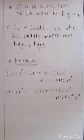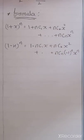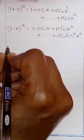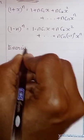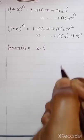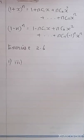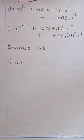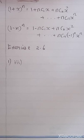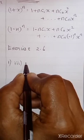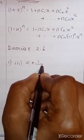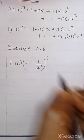Shall we get into the exercises? Take your exercise 2.6, first problem. I will do the third subdivision — the remaining subdivisions are your homework. The question is: expand X plus 1 by X squared, the whole power 6, using the binomial theorem.